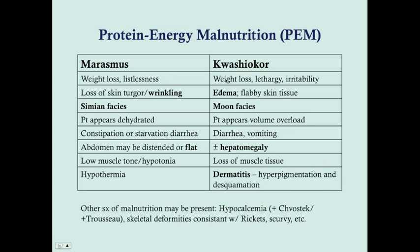With Kwashiorkor, you similarly see weight loss, but unlike Marasmus, you see more signs of edema, flabby skin tissue, and moon facies — the face looks like a fat child but it's just edema. The patient appears to be in volume overload rather than dehydrated. There's also diarrhea and vomiting, hepatomegaly, loss of muscle tissue, and dermatitis with hyperpigmentation and desquamation. The key differences: Kwashiorkor has edema and moon facies; Marasmus has wrinkling and appears more dehydrated, with no edema.